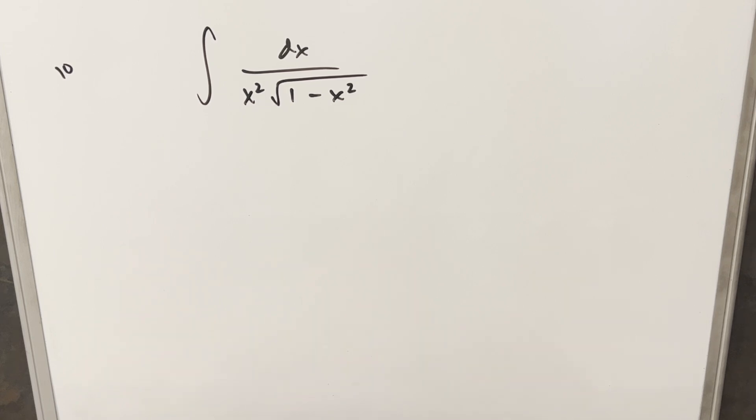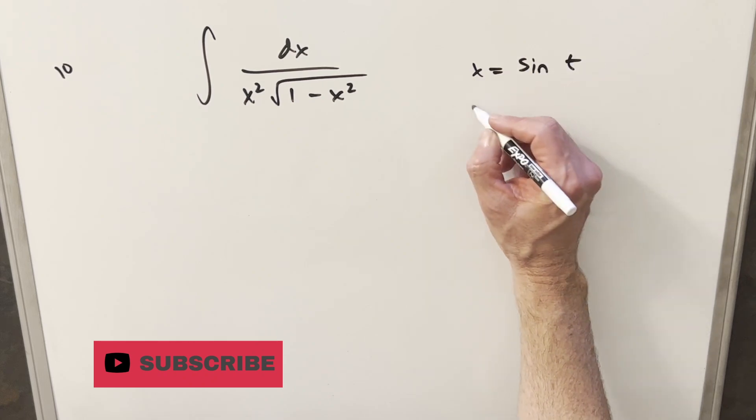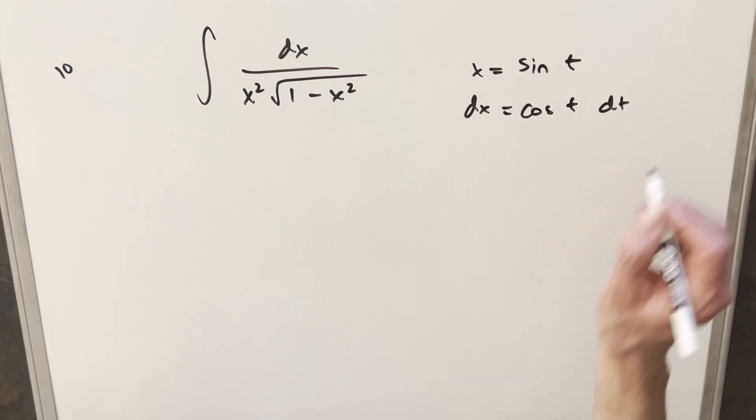I think I'm just going to go ahead and do the obvious thing here and do the trig substitution. This is perfectly set up for using sine. So what I can do is make my substitution for x equals sine of t. Then we find that dx is going to be just cosine of t dt.